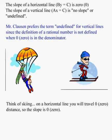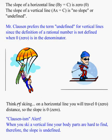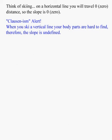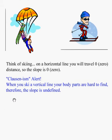All right, so let's take a quick little look about skiing again. And if we think of skiing, a horizontal line, the amount of distance you travel due to gravity is zero, so the slope is zero. But the vertical line is a little bit different, so I have a silly little saying to try to help you remember this, that if you try to ski a vertical line, your body parts would be hard to find, therefore the slope is undefined. And yes, it rhymes.